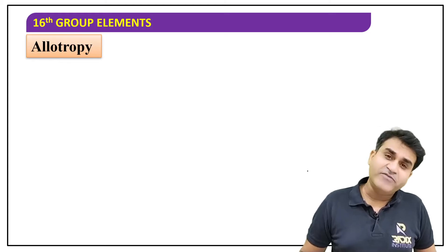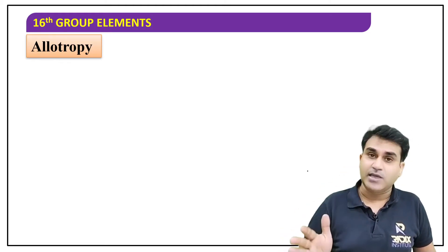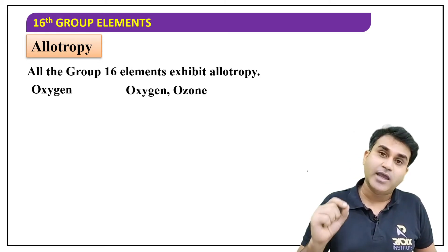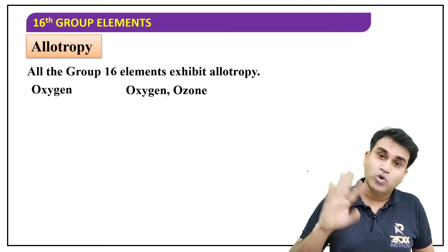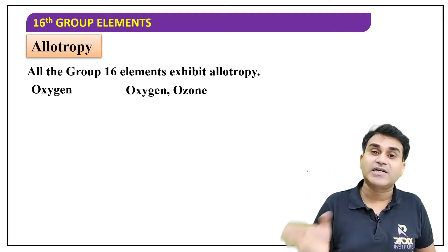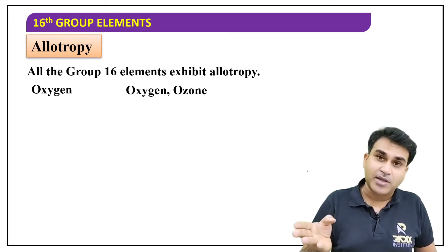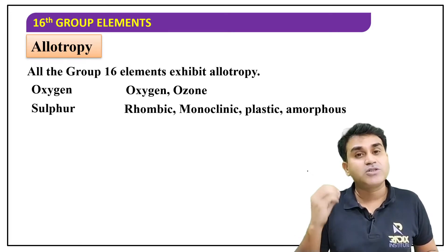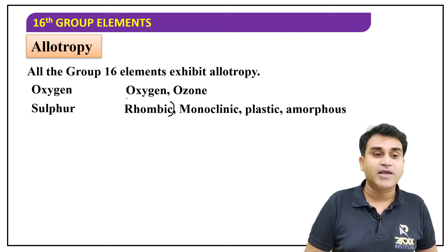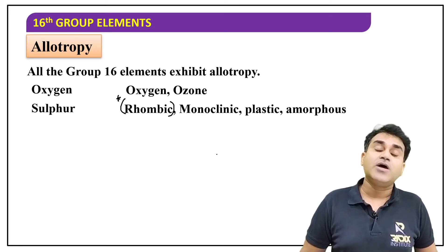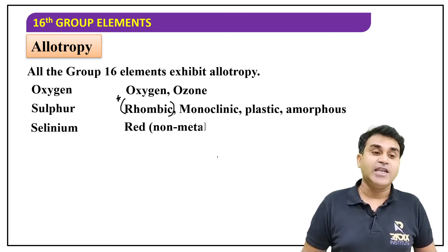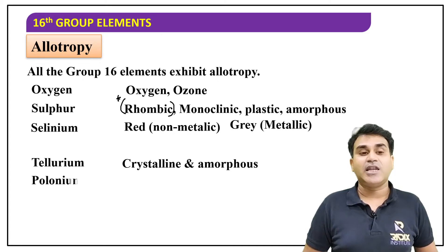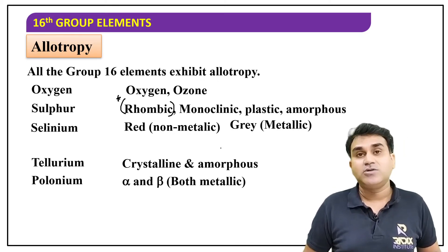Allotropy — in the 15th and 16th groups, allotropes are found. Different forms of the same element exist. Oxygen's allotropes are dioxygen (O₂) and O₃ (ozone) — both are elemental forms but with different characteristics. Sulfur's two most common allotropes are rhombic and monoclinic. Always remember: rhombic sulfur is the standard state and most stable state at room temperature. Selenium has red and non-metallic grey metallic forms. Tellurium has crystalline and amorphous forms. Polonium has alpha and beta forms.